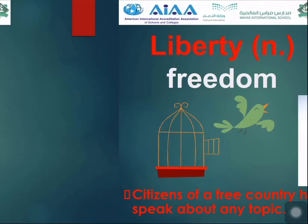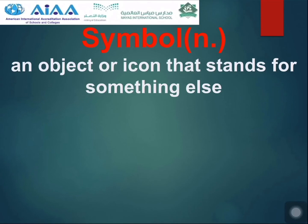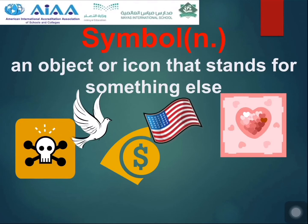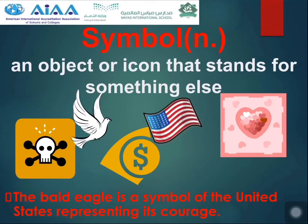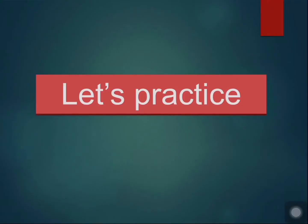Symbol is also a noun. It's an object or icon that stands for something else. For example, a flag is a symbol of a country. A heart can be a symbol of love, a dollar sign is a symbol for money, and a dove is a symbol of peace. The bald eagle is a symbol of the United States, representing its courage.